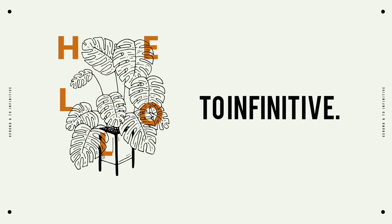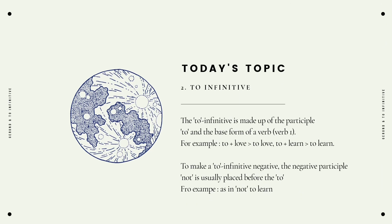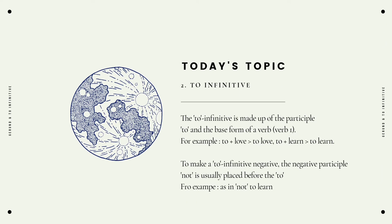Now we're going to discuss to-infinitive, which will be explained by my friend Jelita Graciana. To-infinitive is made up of the particle 'to' and the base form of a verb. For example: 'to love,' 'to live,' and 'to learn.' To make the negative form, the word 'not' is usually placed before 'to,' as in 'not to learn.'